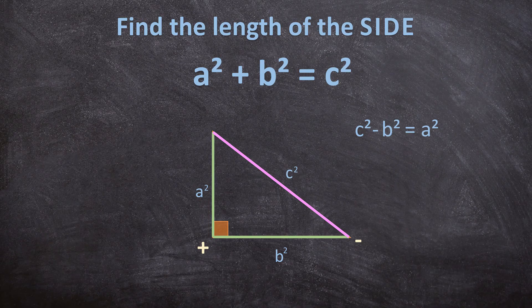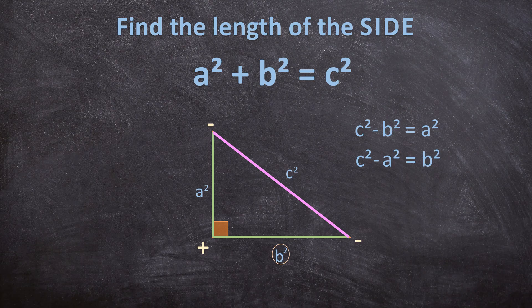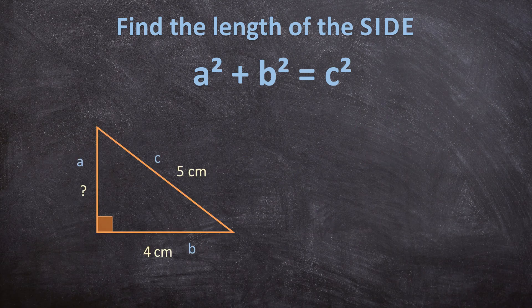And what if you need to calculate the length of B? You take C² again, subtract A², and that gives you the value for B². This is how you calculate the length of B. Now let's go back to our example — the first thing we do is write down our formula.